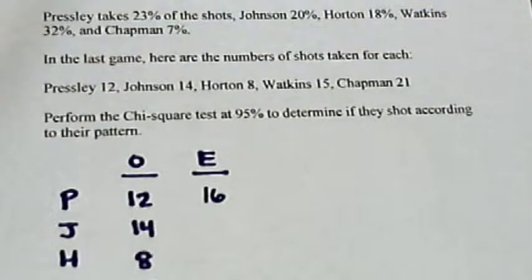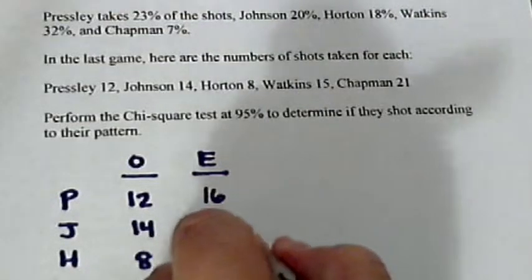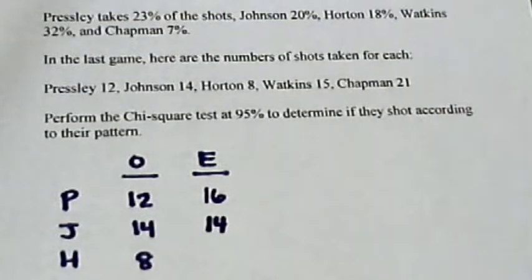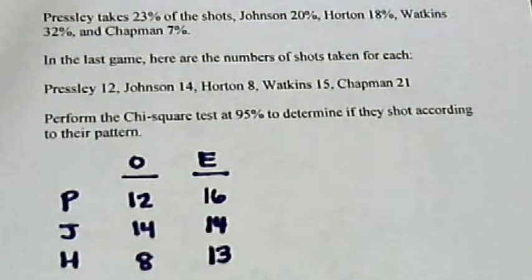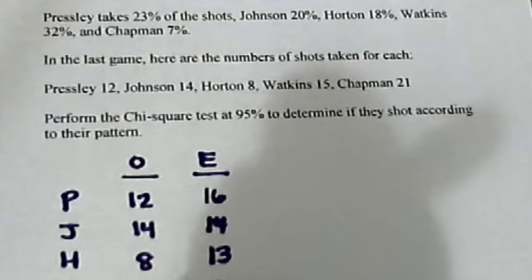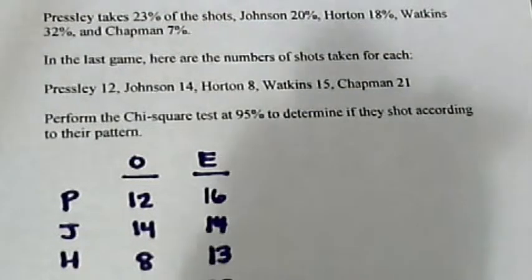And if we do the same the rest of the way down, out of 70, 20% for Johnson would be 14 shots. So Johnson hit his expected percentage. Horton does 18%. So, if we round up, this would be 13 shots. Watkins, 32%. So that would be 22 shots. And Chapman, 7%, which would be 5 shots.